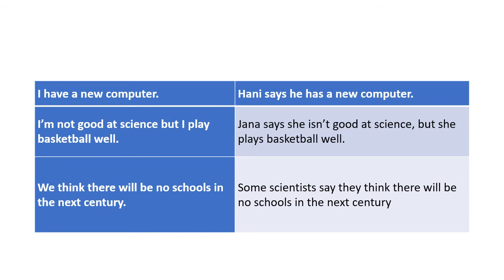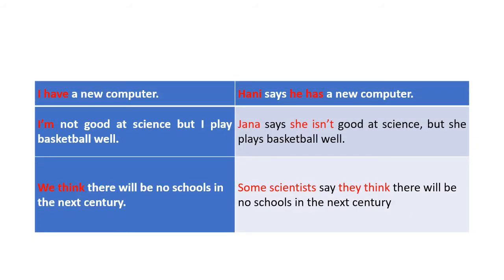We think there will be no schools in the next century. Some scientists say they think there will be no schools in the next century. Yes, you are right — this is the difference. The I changed to he, and have changed to has. I changed to he because we say I have but he has. Remember the first rule: I have, he has. I'm not good at science — she is not, because I am but she is.